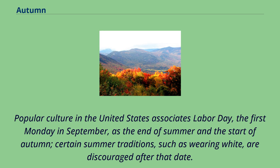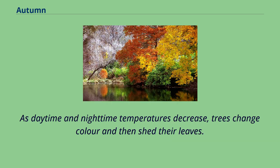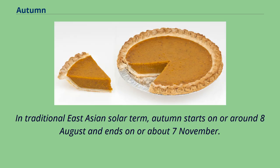Popular culture in the United States associates Labor Day, the first Monday in September, as the end of summer and the start of autumn. Certain summer traditions, such as wearing white, are discouraged after that date. As daytime and nighttime temperatures decrease, trees change color and then shed their leaves. In traditional East Asian solar term, autumn starts on or around 8th of August and ends on or about 7th of November.